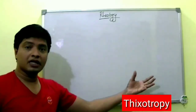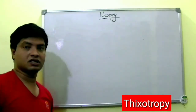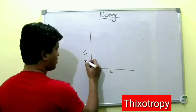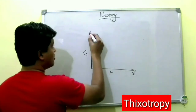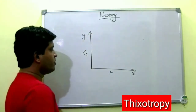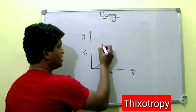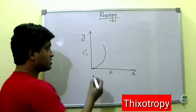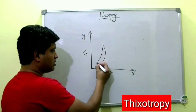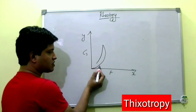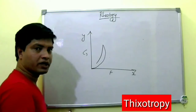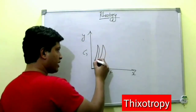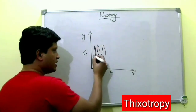Now considering this mechanism, how can you plot the graph for thixotropy? When you apply shear stress, the system loses viscosity. When you remove shear stress, it gains back viscosity but with less than the initial value. Again apply stress — loses viscosity; remove — gains back but lower. This cycle repeats, and that is how you draw the graph for thixotropy.